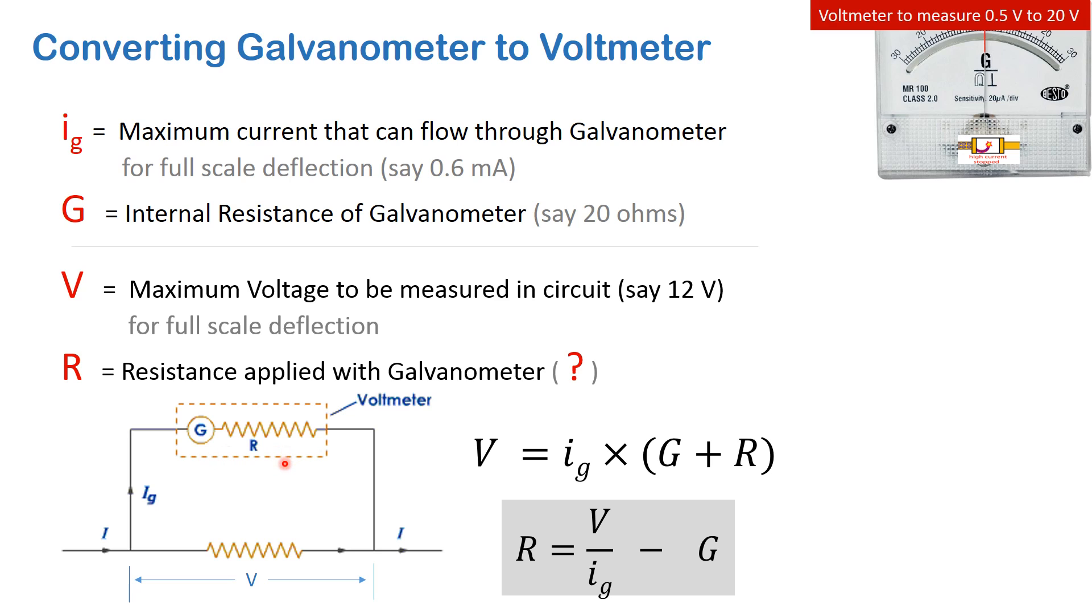Now if we put in the values that we have been discussing, the maximum voltage that we want to measure is 12 volts, the maximum current that can flow in the galvanometer is 0.6 milliampere. We get the value of R as 20 kilo-ohm, which is a very big resistance.